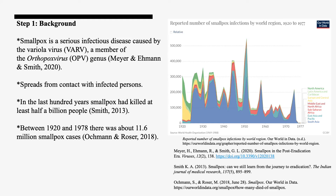Step 1: Background. Smallpox is a serious infectious disease caused by the variola virus, a member of the orthopoxvirus genus. It spreads from contact with infected persons — contact with skin, materials, or body fluids — and also through inhalation of micro droplets shed from an infected person. In the last hundred years, smallpox killed at least half a billion people, and between 1920 and 1978, there were about 11.6 million smallpox cases.